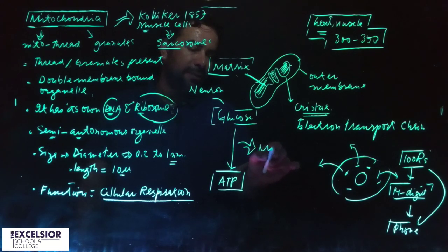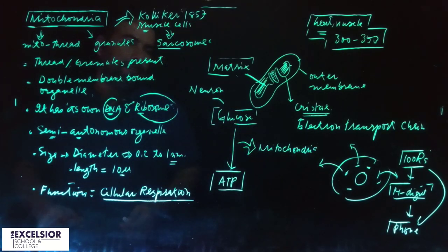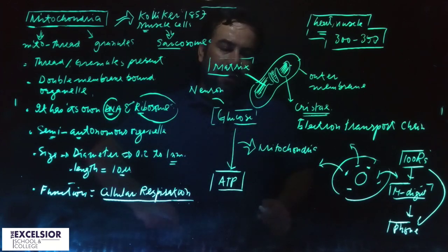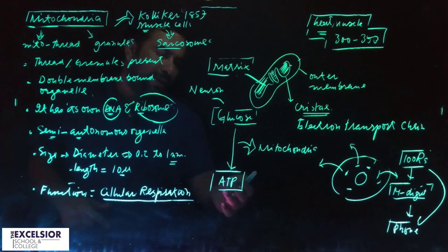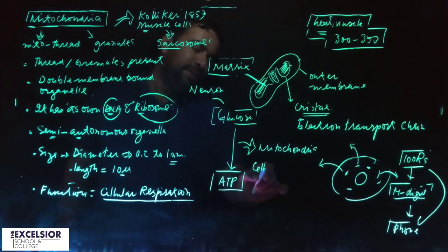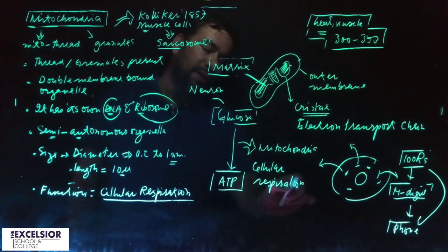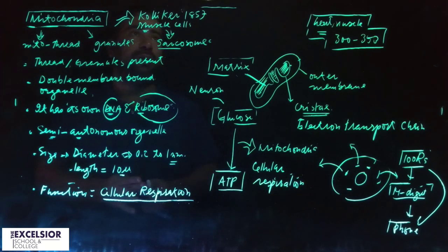For that conversion you might be needing mitochondria. The function that mitochondria performs of conversion into ATP is exactly what they call cellular respiration. What is glucose converting into ATP? This is what they call cellular respiration.